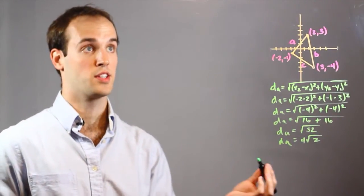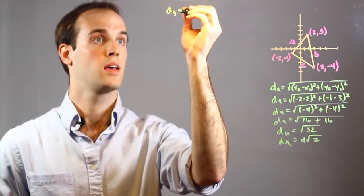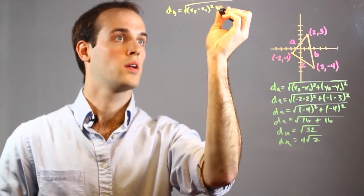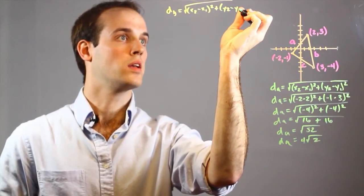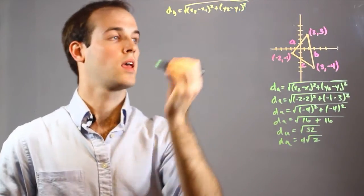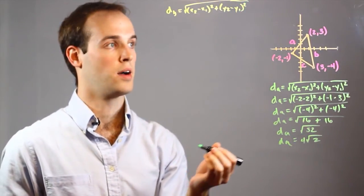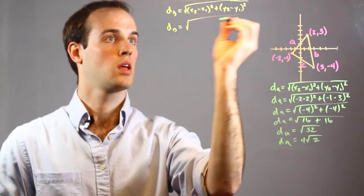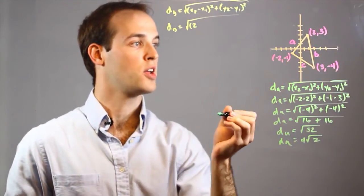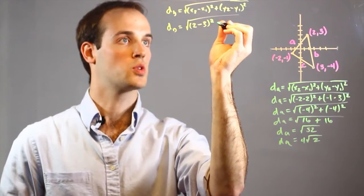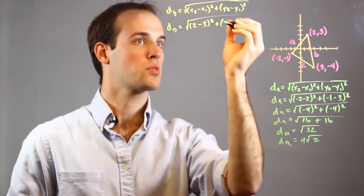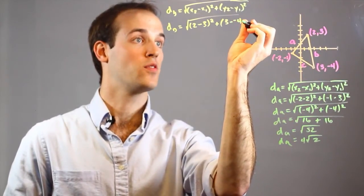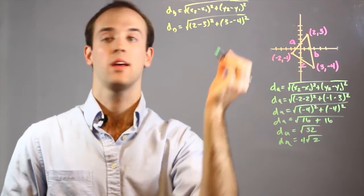And for the next two, it's a very similar process. So I'm going to do D sub B equals the square root of (x2 minus x1) squared plus (y2 minus y1) squared. And then I just plug in my coordinates for B, which I have a 2 minus my x value down here, which is 3. So 2 minus 3 squared, plus y2, which is 3, and my y1, which is negative 4, so 3 minus negative 4, squared.